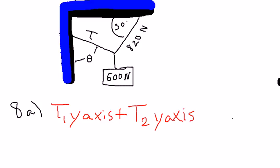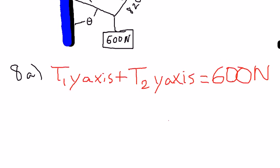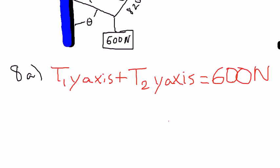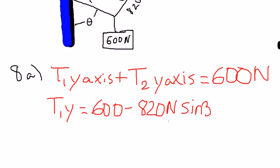The tension is going to equal the weight which is 600 newtons, and so the tension for the y-axis is equal to 600 minus 820 newtons sine 30 which equals 190. So tension of the y-axis is going to be 190.